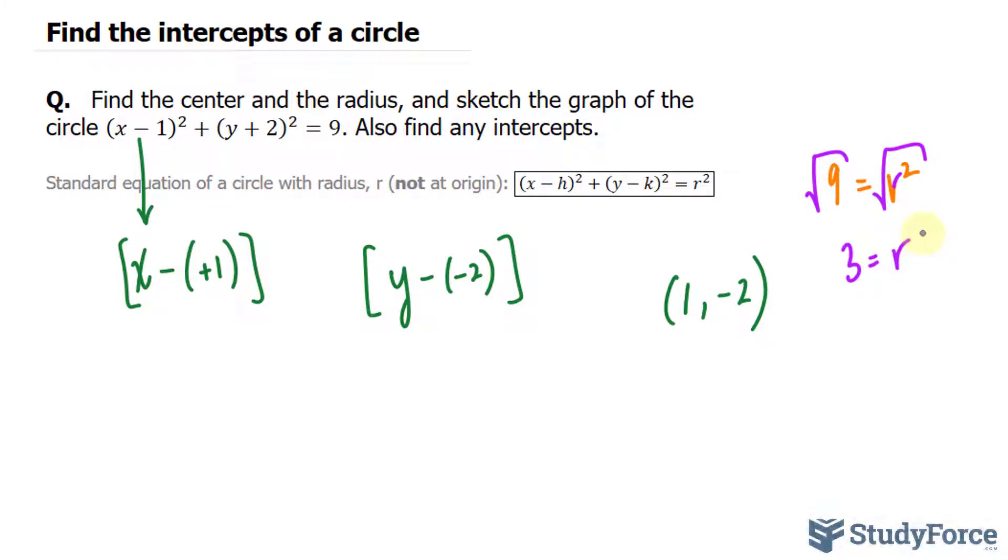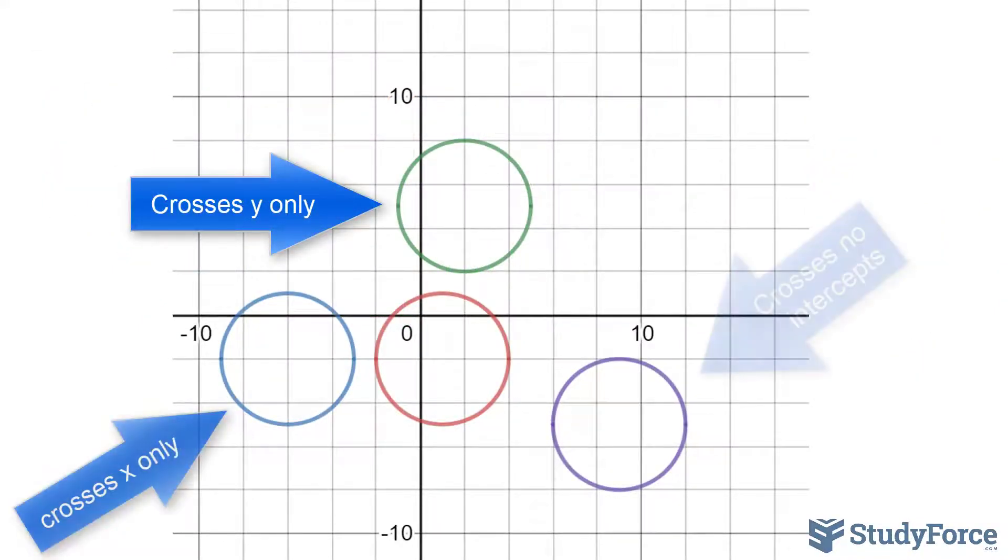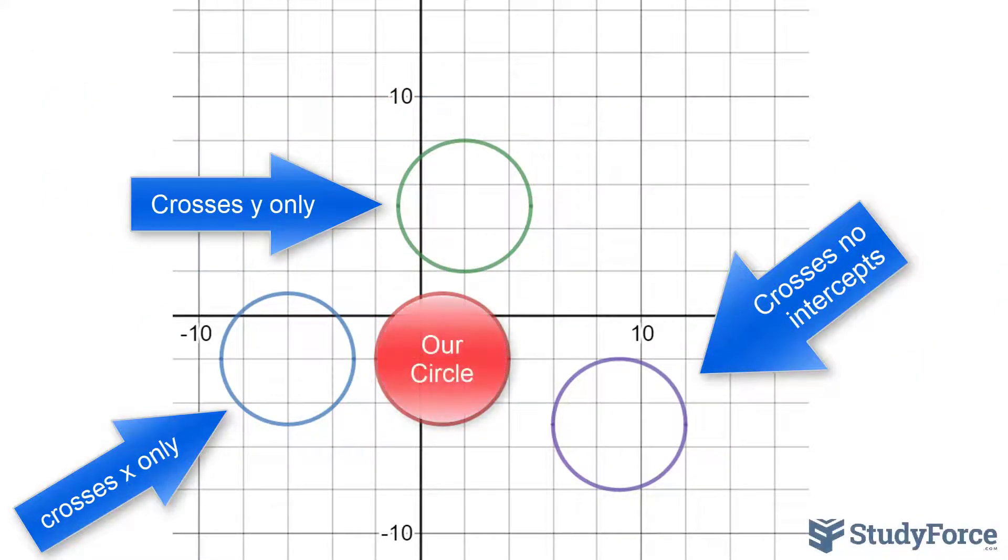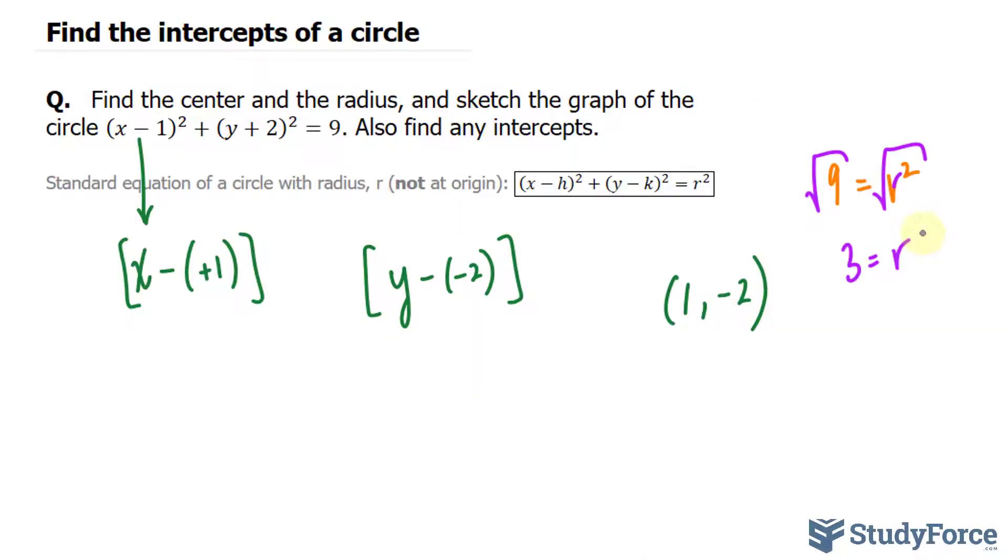Our center is at 1 and negative 2. We also need to find the intercepts. To find the intercepts, take a look at the image on your screen. Notice that a circle may cross the x and y intercept. When it crosses the x intercept, y is equal to 0. And when it crosses the y intercept, x is equal to 0. So what we can try to do here is substitute x equals 0 and find out what the y intercepts will be.